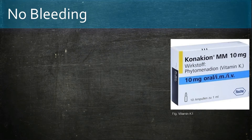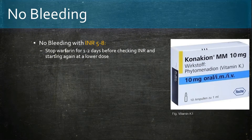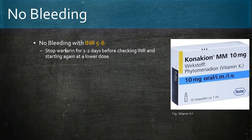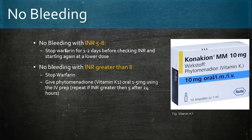When a patient presents with no bleeding but the INR is elevated: if the INR is between 5 to 8, stop warfarin for 1 to 2 days before checking the INR again and restarting at a lower dose. If the INR is greater than 8, stop warfarin and give vitamin K orally using the IV prep shown on the right.